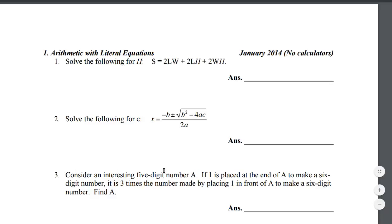Consider an interesting 5-digit number A. If 1 is placed at the end of A to make a 6-digit number, then it is 3 times the number made by placing 1 in front of A to make a 6-digit number. Find A.